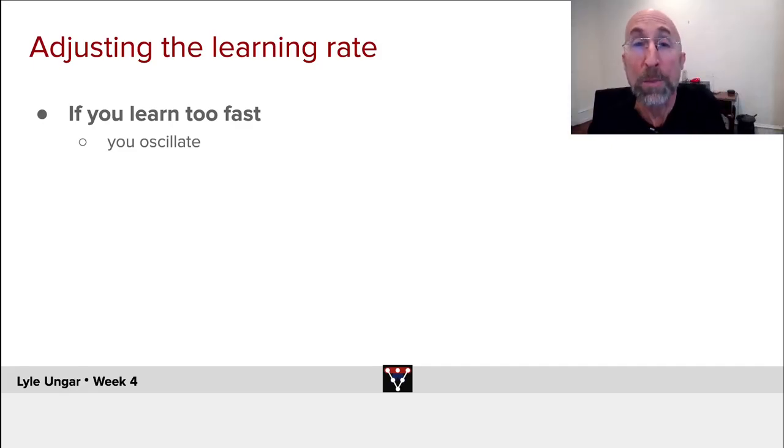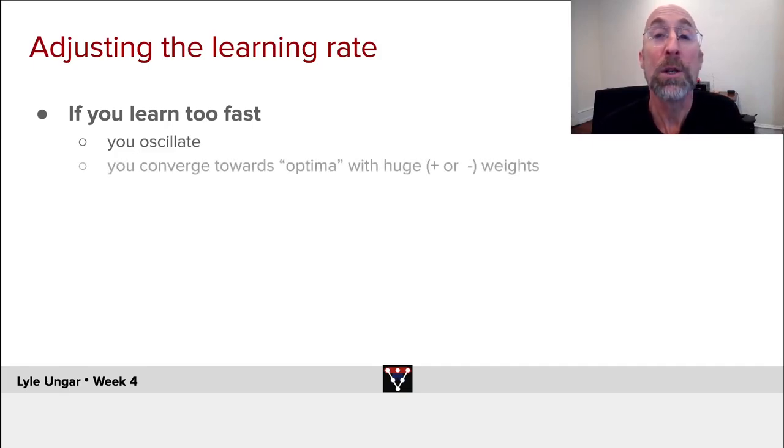You converge often to optima with huge weights, either very positive or very negative, so you converge to really stupid local optima. And the gradient can also become tiny, causing converging problems.